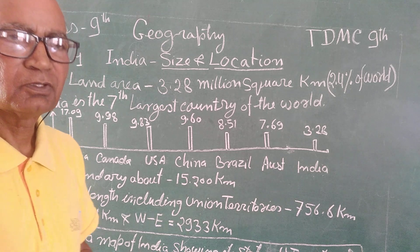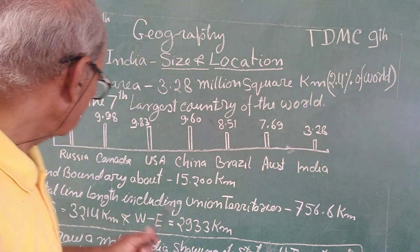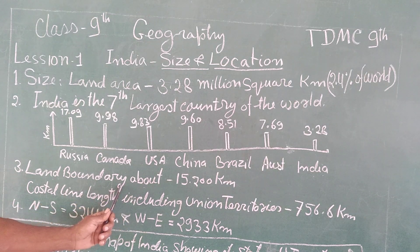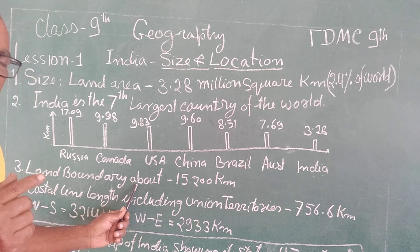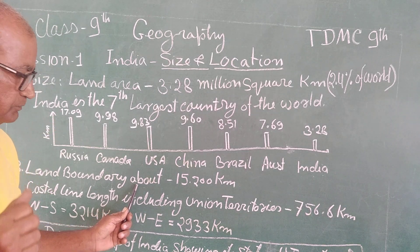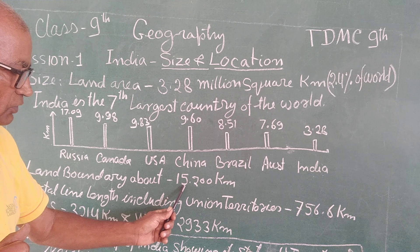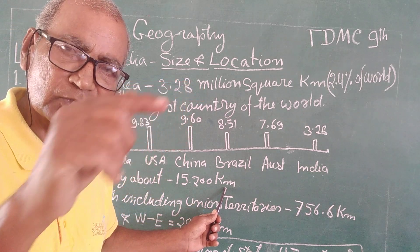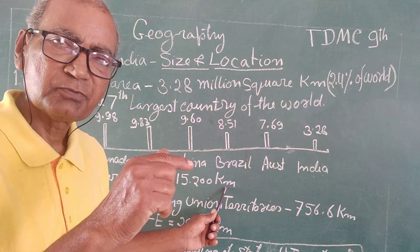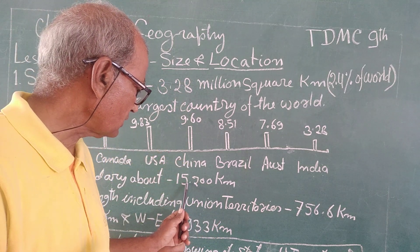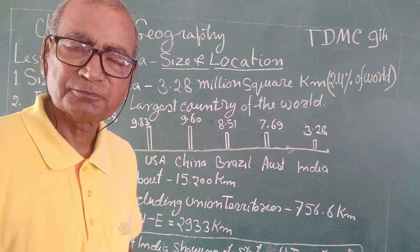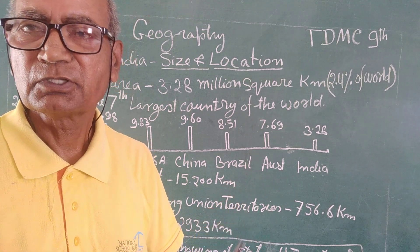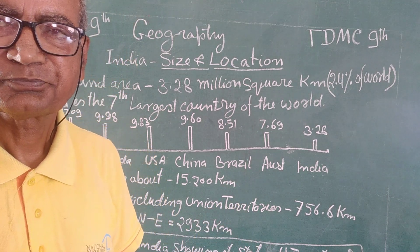Our country has got a land boundary — the perimeter of the country is 15,200 kilometers.